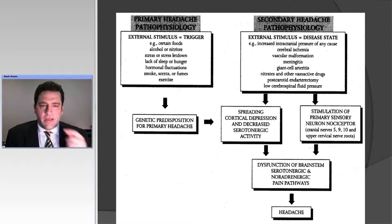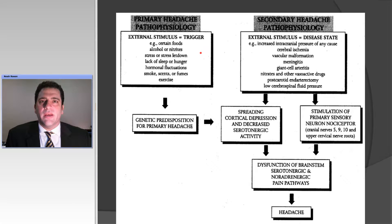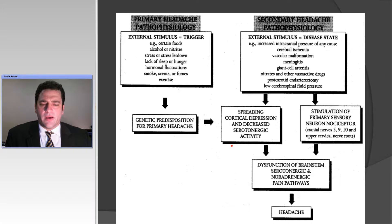One of the distinctions we make between primary and secondary headaches is really whether or not the external stimulus is the disease state or the trigger for the disease state. Under primary headache, there are certain triggers — whether they be menstrual cycle, stress, certain foods, or change in sleep — which act upon a genetic predisposition leading to the pathophysiology of spreading excitation and depression that moves through the brain and decreased serotonergic activity. That represents the aura that we see. When that spread goes across the brain, it acts upon a dysfunction of the brainstem serotonergic and noradrenergic pain pathways — sometimes termed the trigeminovascular system — and that leads to headache.